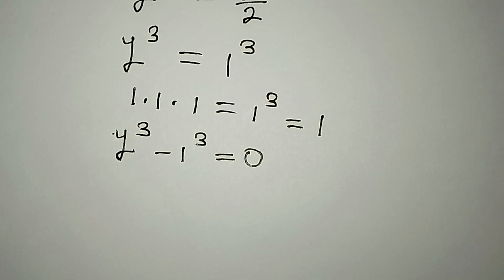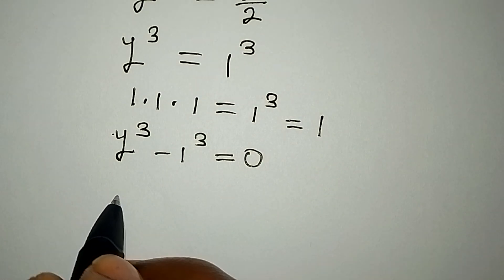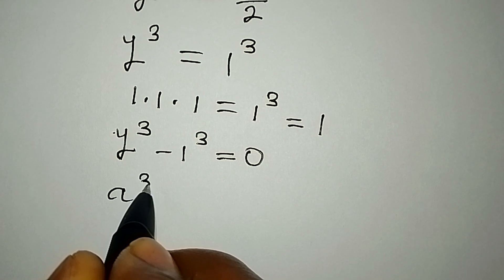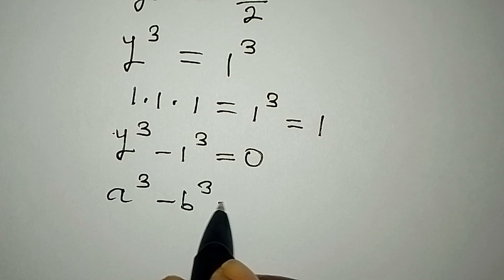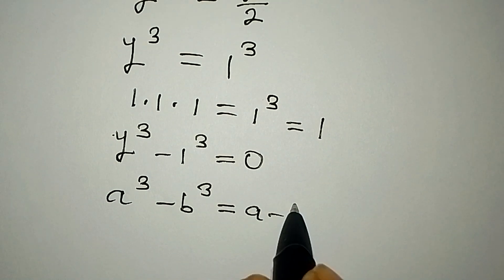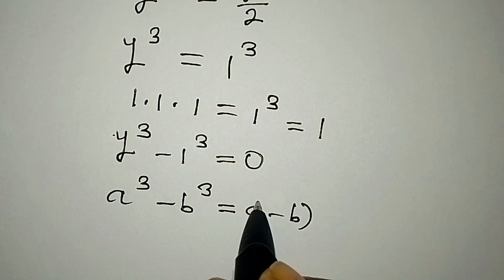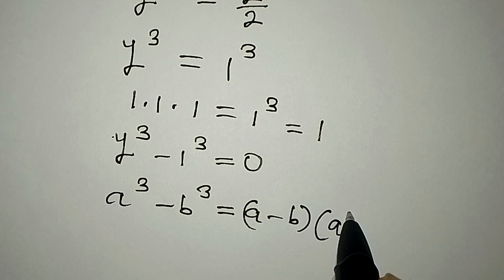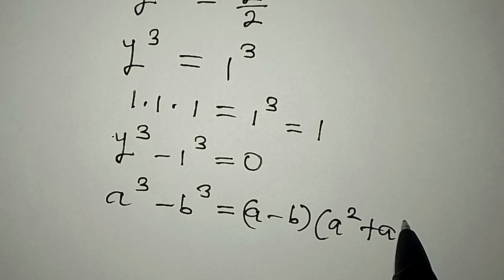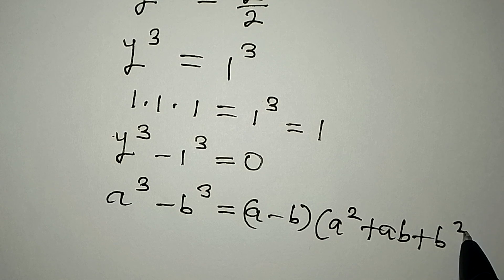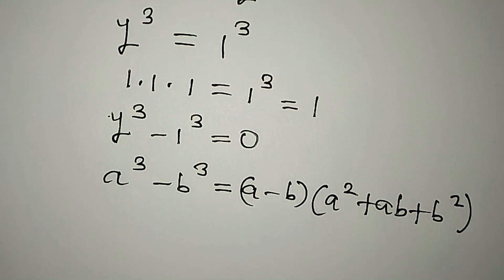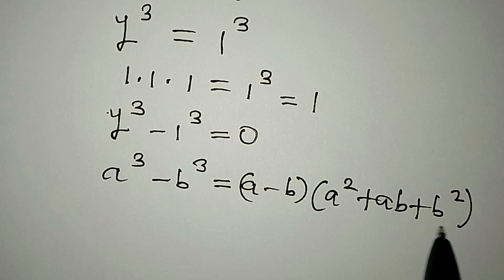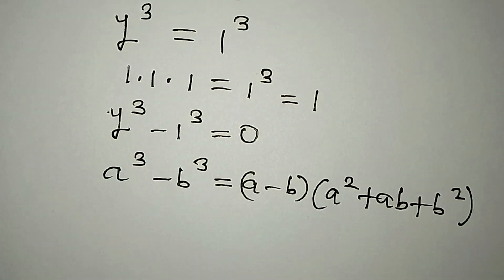From here, can you recall this standard identity: a to the power of 3 minus b to the power of 3 equals a minus b, times a squared plus ab plus b squared? We are going to apply this to what we have over here.